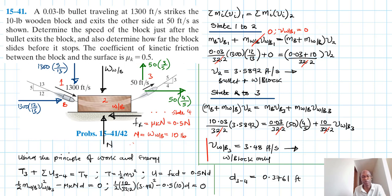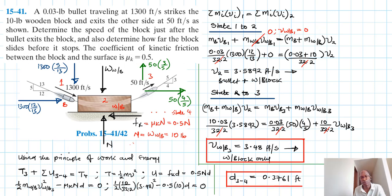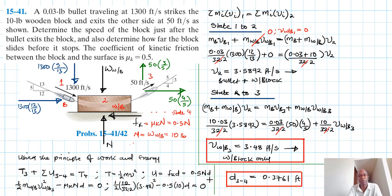So we have found the velocity of the block and the distance that the block moves to the right from state three to state four. I hope this video was helpful. If it was, give me a thumbs up, continue subscribing and liking my channel. Bye bye, and see you in my next screencast.